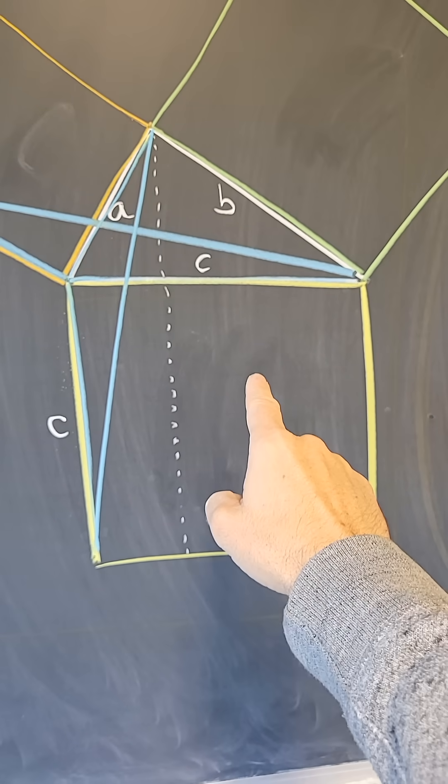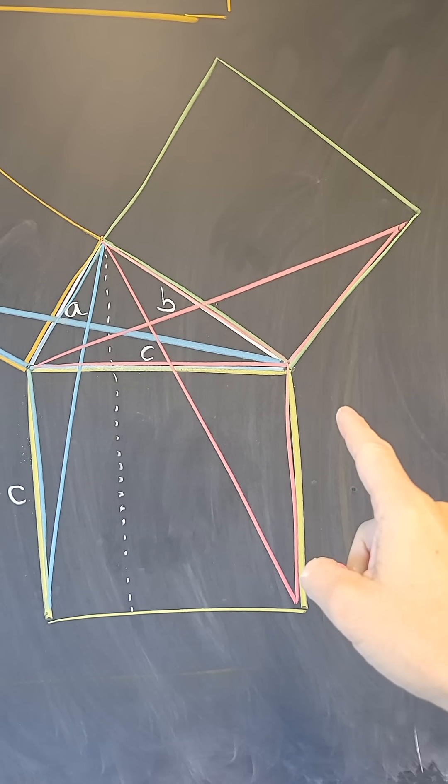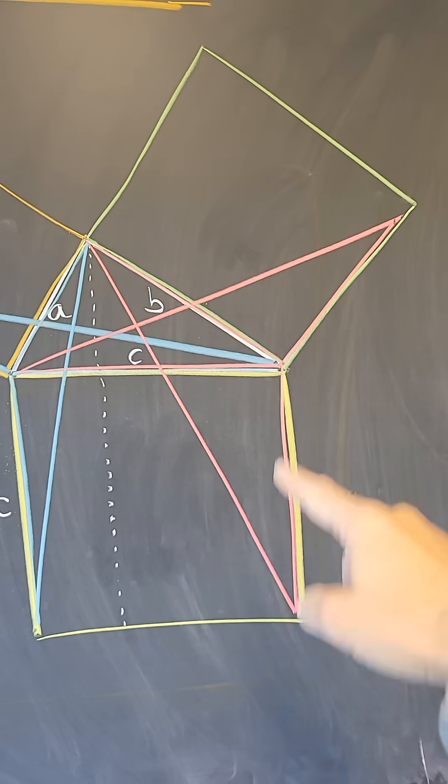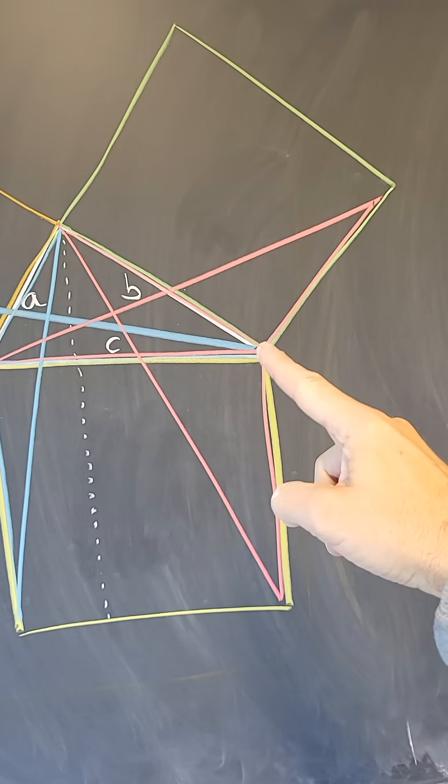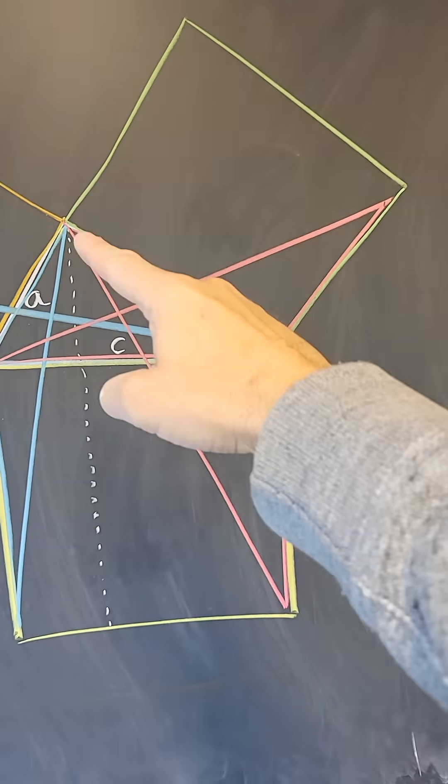So now we're going to prove that this rectangle here has area B squared. And now I've drawn two pink triangles, this one and this one. This one has side B and height B. So this one has area B squared divided by 2.